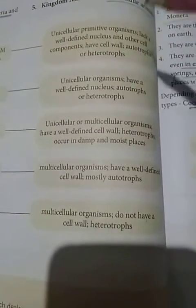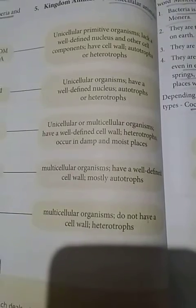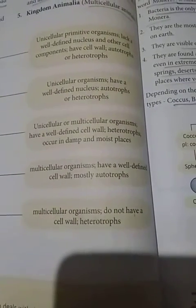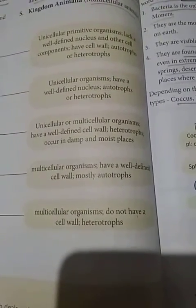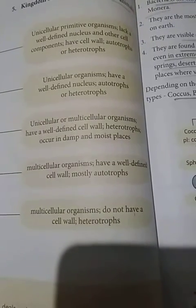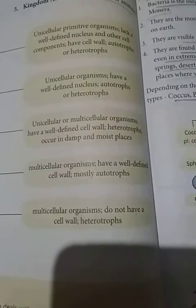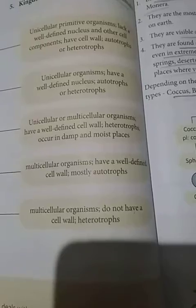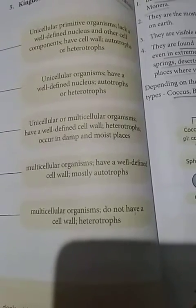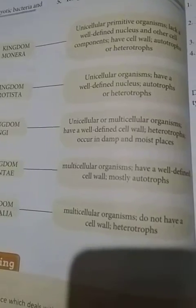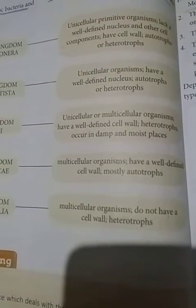In this schematic representation you can see Kingdom Monera: unicellular, meaning made up of only a single cell, and primitive, meaning the body is not highly specialized. They do not have a well-defined nucleus, meaning the genetic material DNA is not enclosed within a nucleus. They have a cell wall - the outer hard covering that protects the cell from getting damaged. They can be autotrophs or heterotrophs. Autotrophs are living organisms that can prepare their own food, while heterotrophs are organisms that cannot prepare their own food and depend on others.